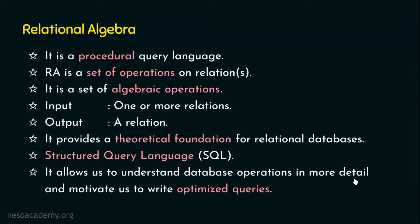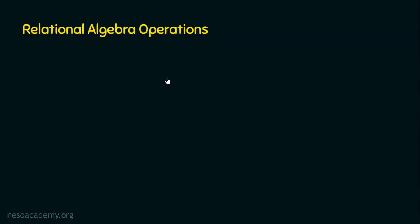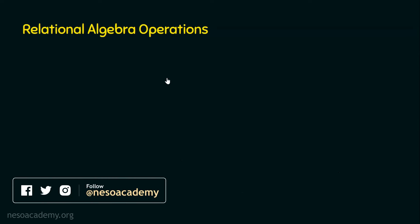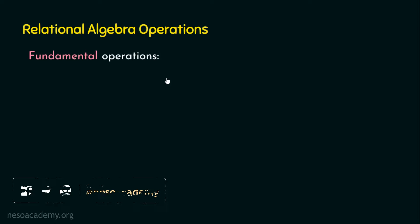We are done with the basics of relational algebra. Before we move on, let's revisit: relational algebra is a set of operations. The relational algebra operations are classified into two categories — number one, the fundamental operations, and number two, the additional operations. In the coming lectures, we are going to focus on all the operations one by one in detail with examples. For now, let's just know the operation names.